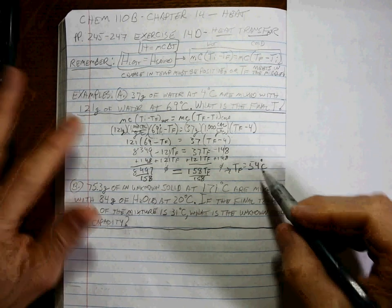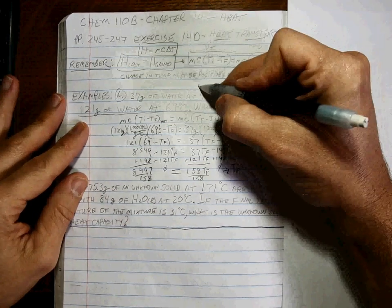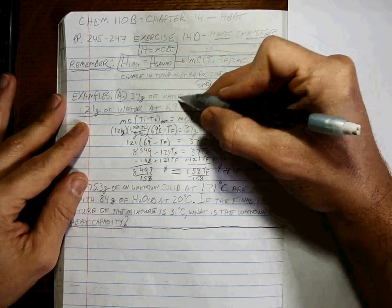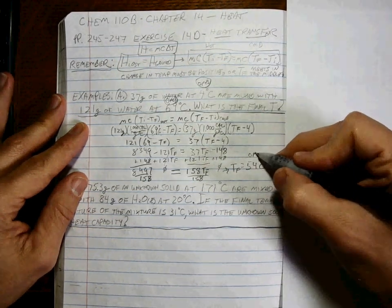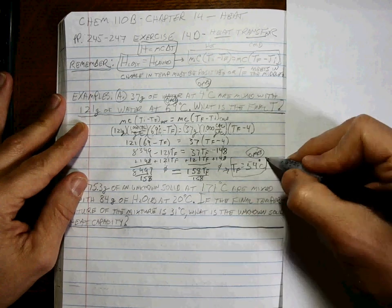Now, why do we use 54? Because this is to the ones place and this is to the ones place, so the final answer is going to be to the ones place. Okay?